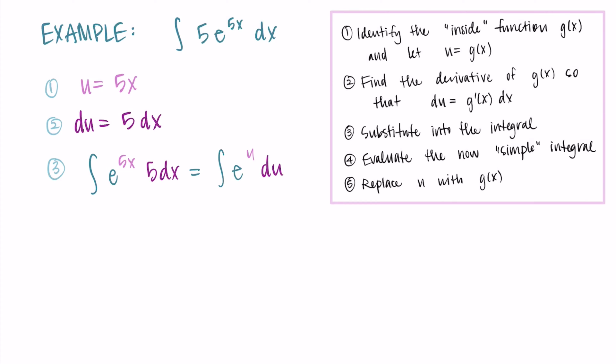Now I have an integral that is entirely in terms of u. And for step four, I can evaluate this now simple integral. So the antiderivative of e^u is just e^u + C. To wrap it up, I have to replace u with what I initially picked it as. So I have e^(5x) + C, and that's my final solution.